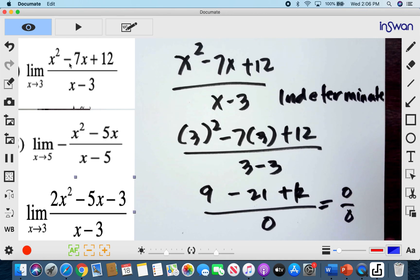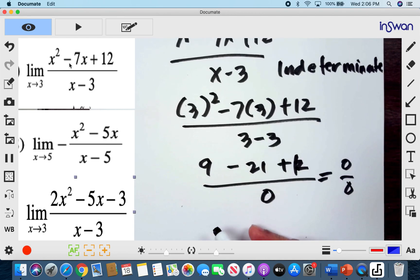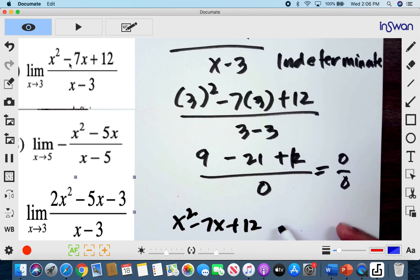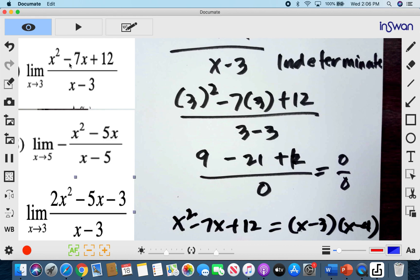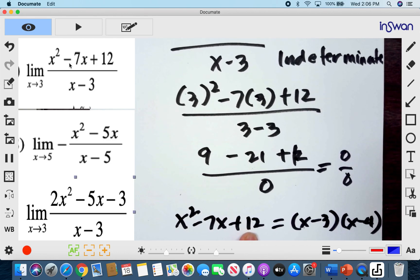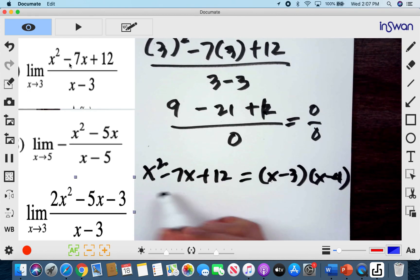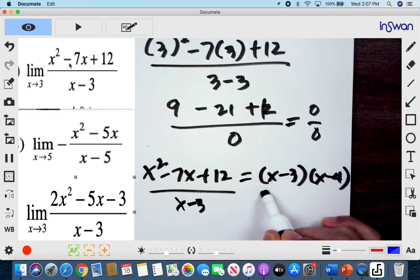Remember that if you have x squared minus 7x plus 12, this is the same as x minus 3 and x minus 4. So you have factors of 12 whose sum is negative 7, and that could only be negative 3 and negative 4. And we will divide this by x minus 3. And that's our given actually.